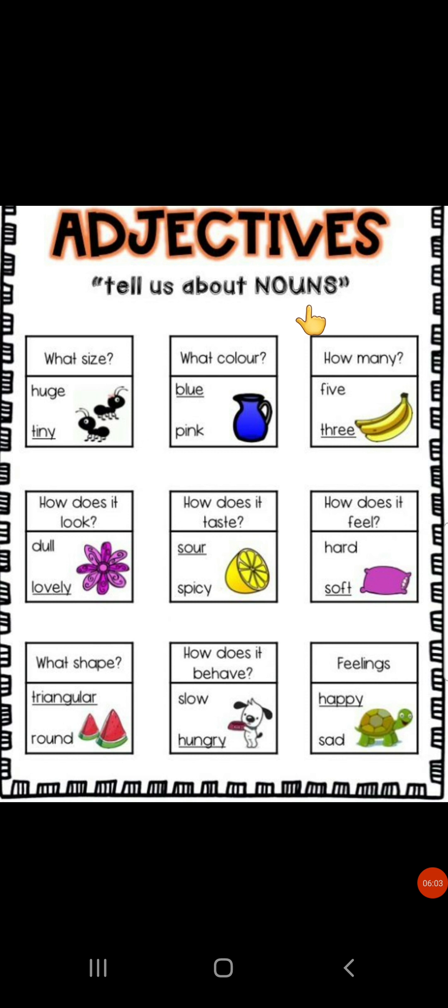Now, adjectives tell us about nouns. Adjectives tell us about the size, the color and the amount of the noun. Like tiny ants, huge, both adjectives, blue jug, three bananas. These are all adjectives. Plus adjectives tell us about the look of a noun. How it looks, how it tastes, and how it feels. Like lovely flower, sour lemon, and soft pillow. Plus adjectives also tell us about the shape of a noun. How does it behave? And how is it feeling? Like triangular pieces of watermelon. And the dog is hungry. And the tortoise is happy. So, these are all adjectives. And now you know very well that what are adjectives.